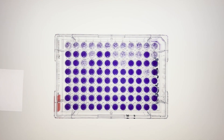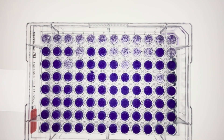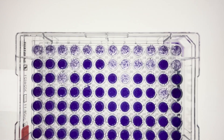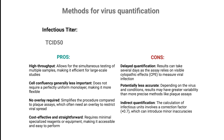The TCID-50 assay is a method used to quantify viruses by measuring their ability to cause cell death, which results in the wells of a cell culture plate turning white. It is suitable for cytopathic viruses with fairly rapid growth, such as influenza or SARS-CoV-2. This assay is high throughput, simple, and cost-effective, but it provides delayed and less precise quantification compared to other methods. We have a dedicated video on the TCID-50 assay, so feel free to check it out if you'd like to learn more.